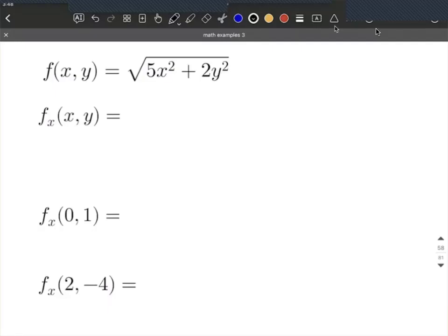In this example we're given a square root function in two variables. Our goal is first to find the partial derivative with respect to x, and then evaluate that partial derivative at a couple different values. To get going, I'm going to rewrite the square root as an exponent, so this is the same as 5x² + 2y² all raised to the 1/2 power.